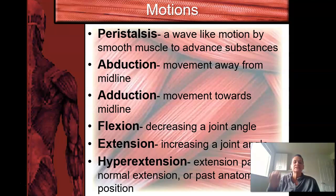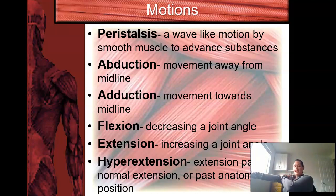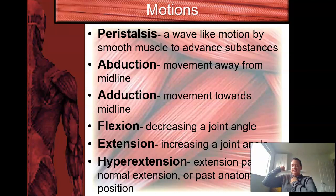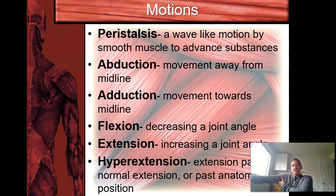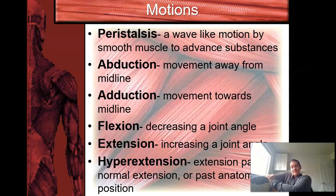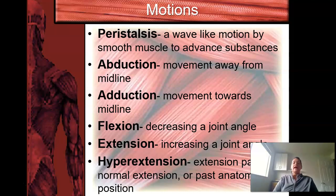Peristalsis is a wave-like motion by smooth muscle to advance a substance. Abduction is movement away from the midline; adduction is movement towards the midline. Flexion decreases a joint angle — if your arm is out at 180 degrees and you bring it in, you are flexing. Extension is making that angle larger. Hyperextension is going past the point of normal extension — your elbow, knee, neck, or back can all be hyperextended. Anything with a flexion and extension can be hyperextended.